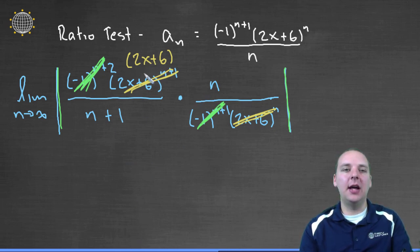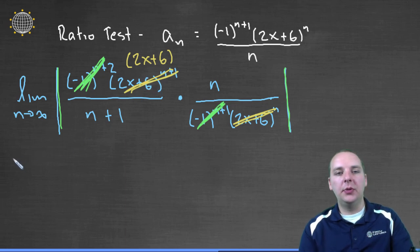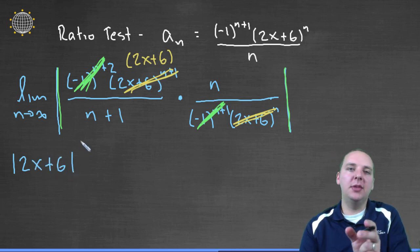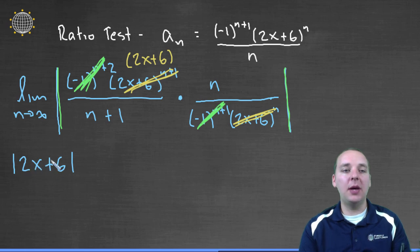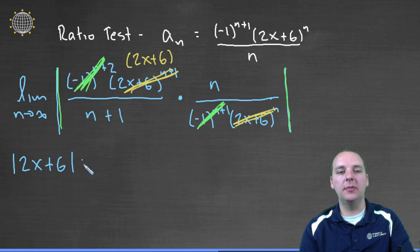The 2x plus 6 does not depend on n, so he can come outside the limit. So we would have absolute value 2x plus 6. And by the way, don't forget, when you pull something outside the limit, don't forget to keep it in absolute values. Unless you know that it's positive, you have to keep it in absolute values. This might be positive or negative depending on x, so he has to keep absolute values. Times the limit as n goes to infinity, absolute value n over n plus 1.